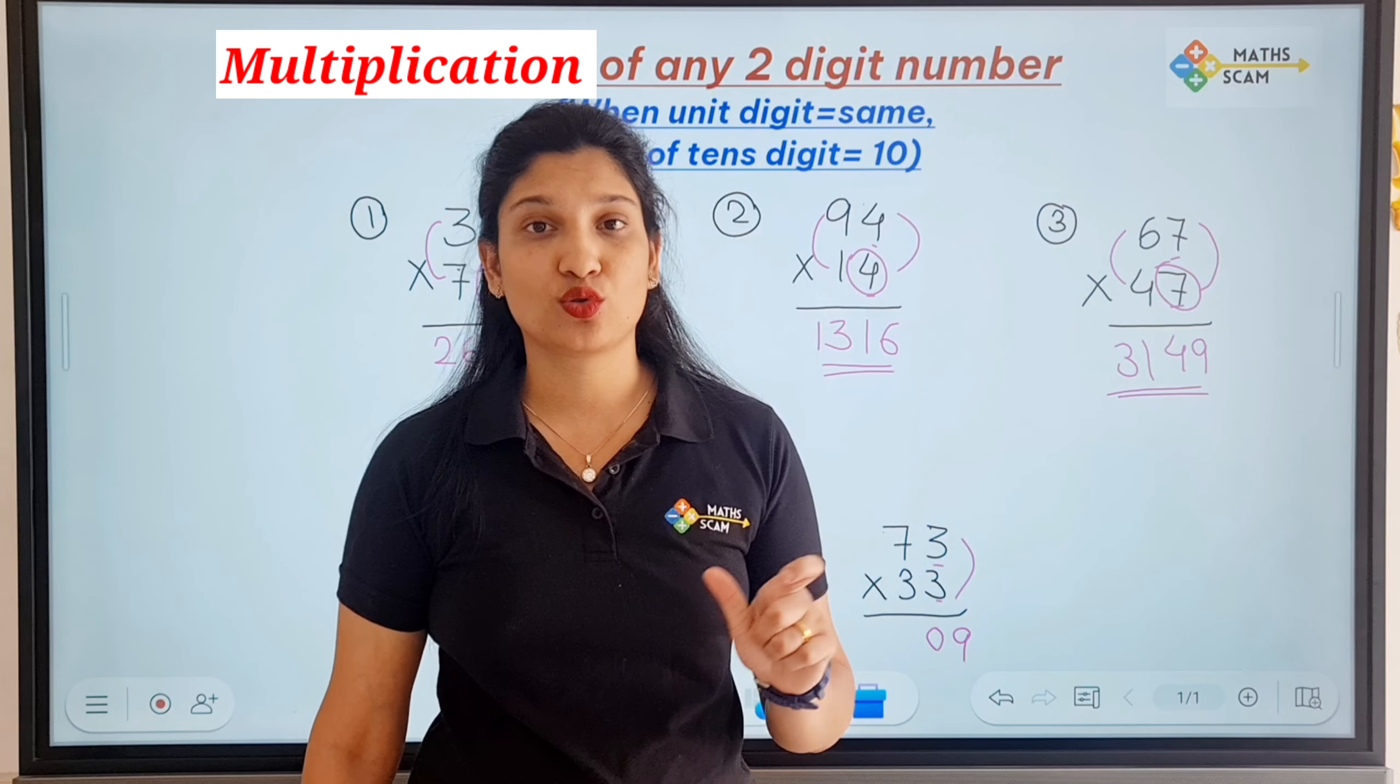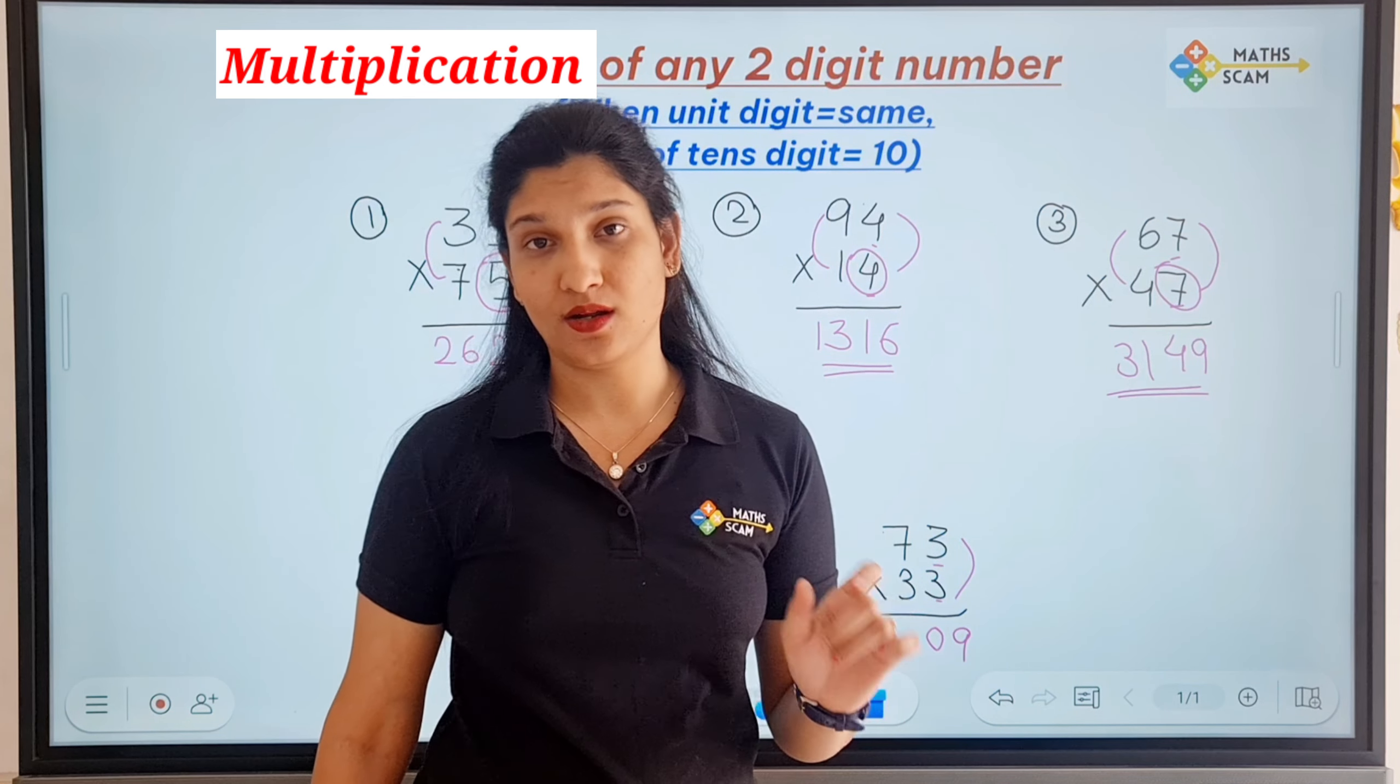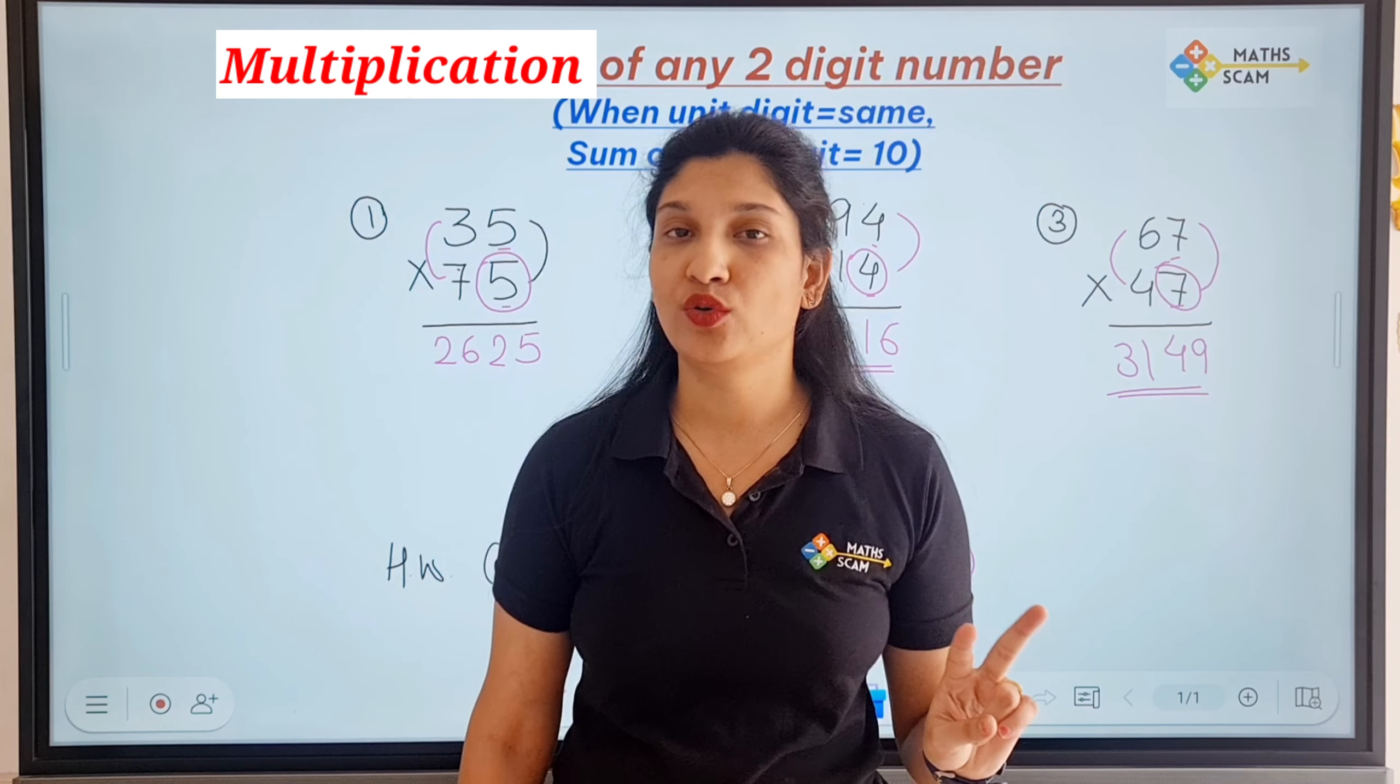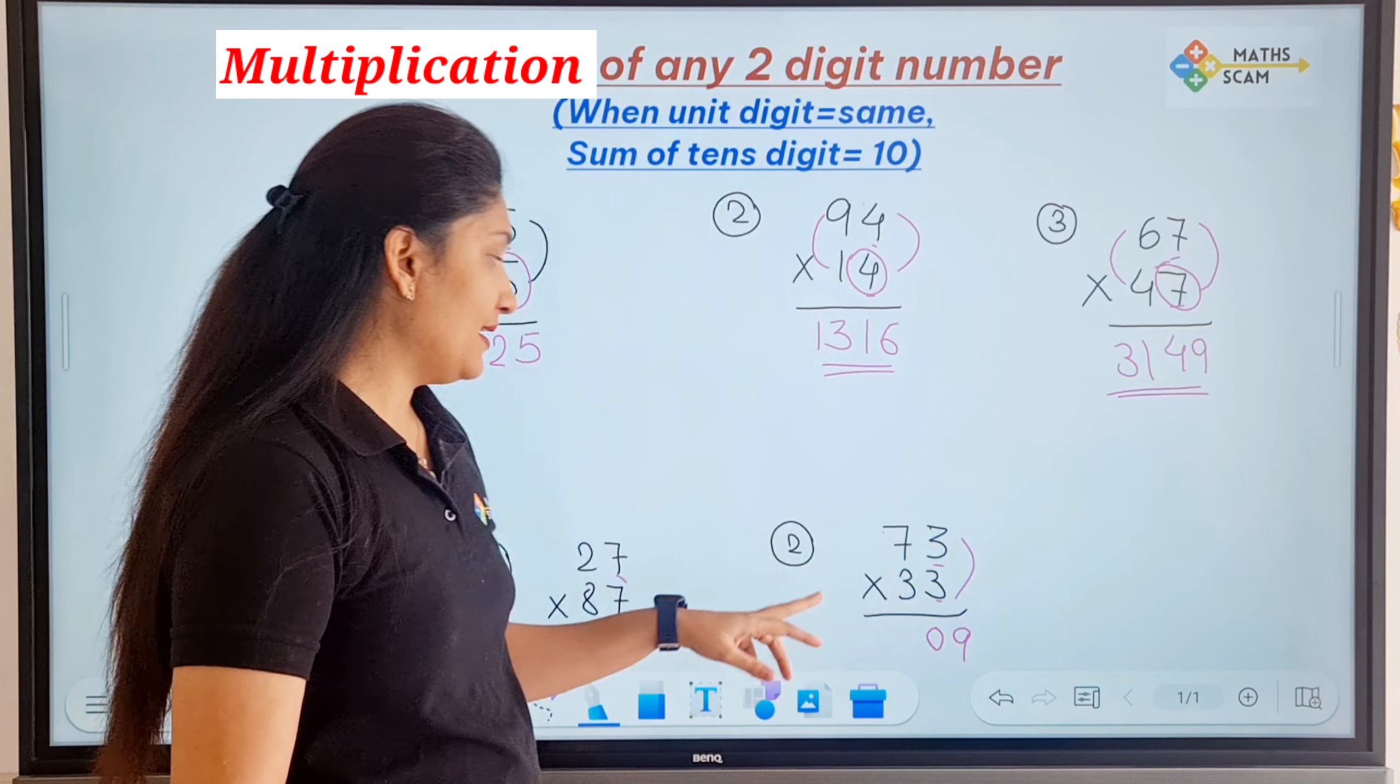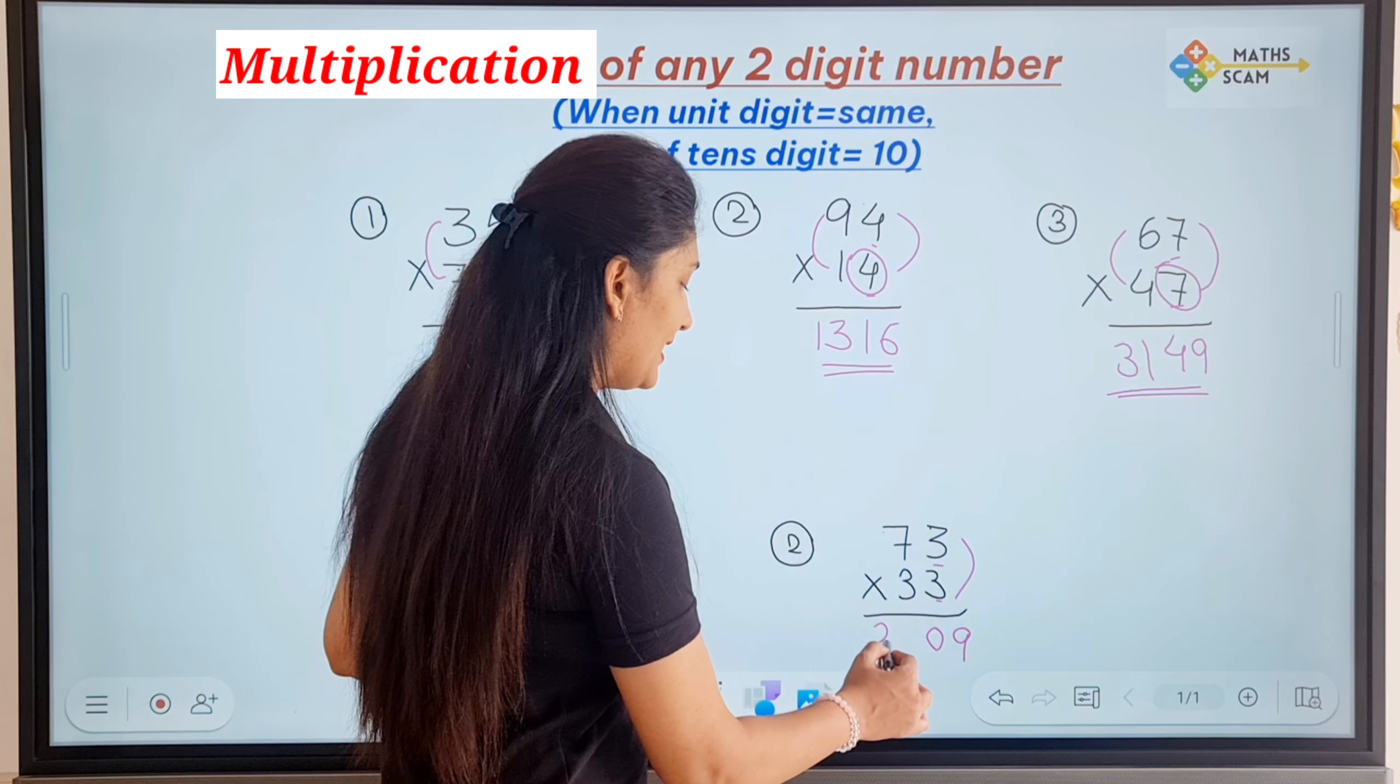Then 8 times 3 is 24, but you have to add the unit digit. So 24 plus 3 is 27, making it a 2-digit number. So the answer is 2709. For 27 times 87: 7 times 7 is 49, 2 times 8 is 16, but wait, it should be 21 plus 7 is 24. So the answer is 2409.